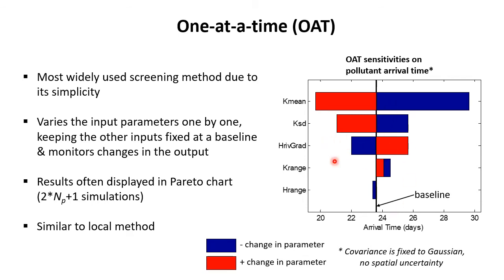The problem with the one-at-a-time method is that by fixing all other parameters, we're not studying interactions — something we'll return to later. There's also the issue that the base case is the mean of the parameters, and in nonlinear systems, the mean of the parameters does not give the mean response. Additionally, we can't really deal with discrete parameters since they cannot be perturbed by a percentage.